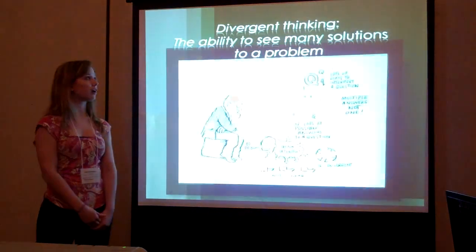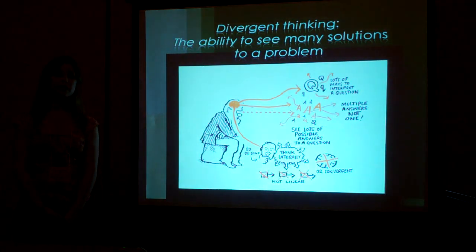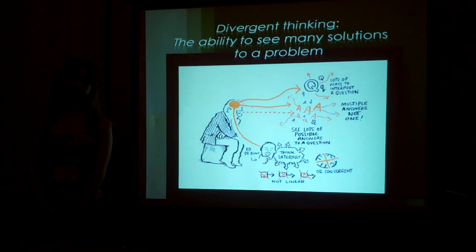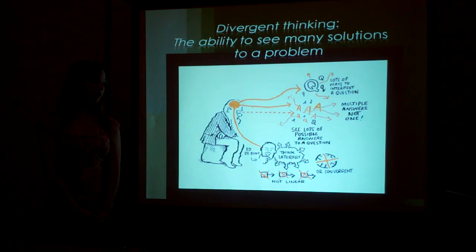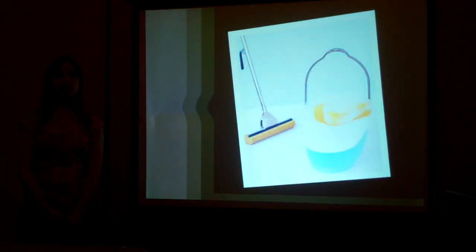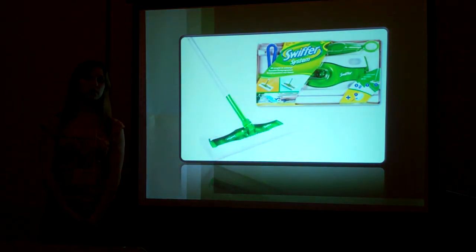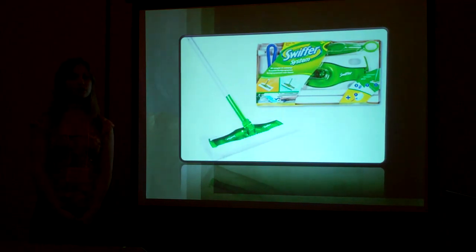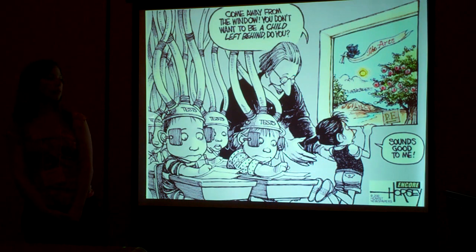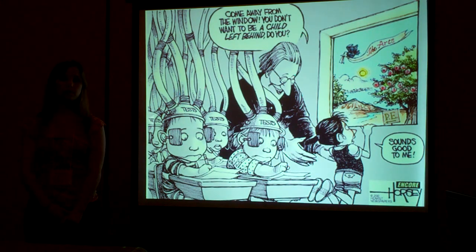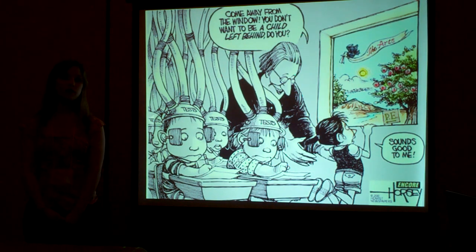Students not only need to think critically, they also need to think divergently. Divergent thinking is the ability to see many possible solutions for one problem. Take, for example, the modern mop — invented in 1893 with relatively no adaptations since. But Procter and Gamble were able to create a million-dollar product, the Swiffer, by using divergent thinking and turning a common cloth into a more efficient mop. But schools actually discourage this type of thinking. Students are often taught one process for solving a problem and that any other process is wrong. Divergent thinking is a skill students need to thrive in an environment full of complex problems, because many times complex problems do not have a single, obvious solution.